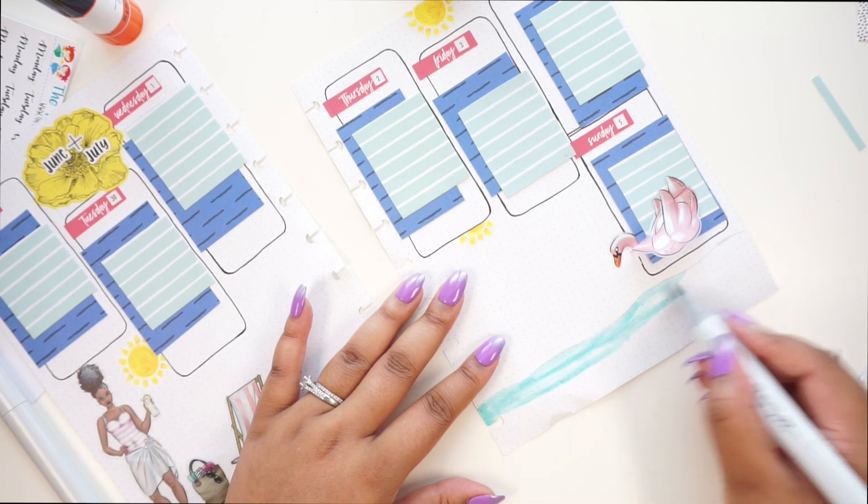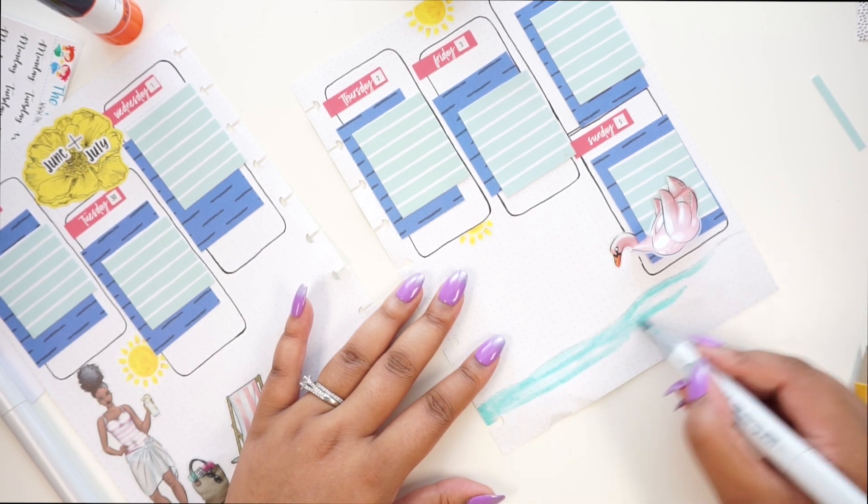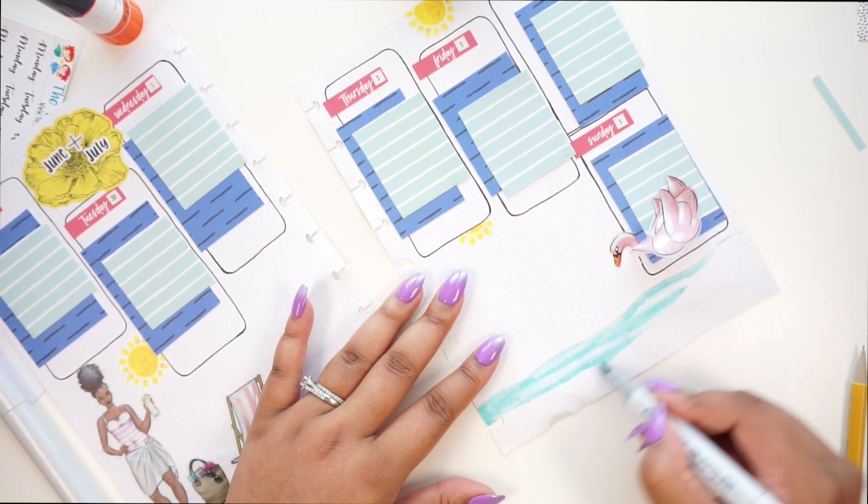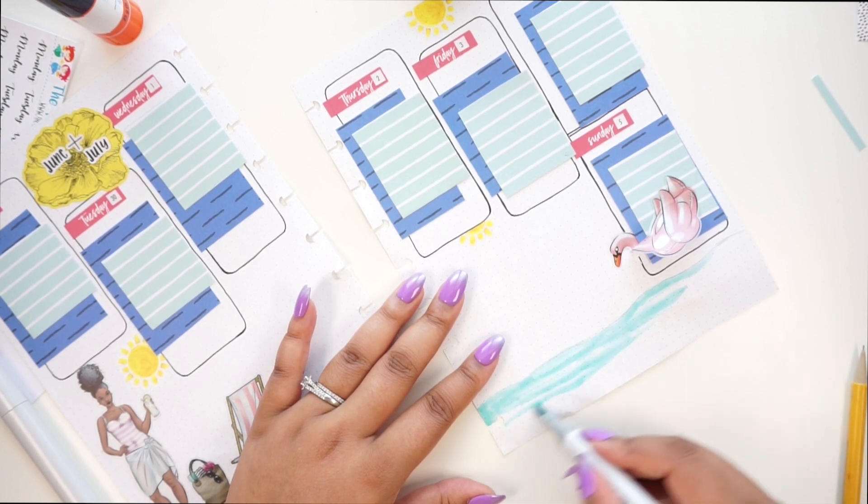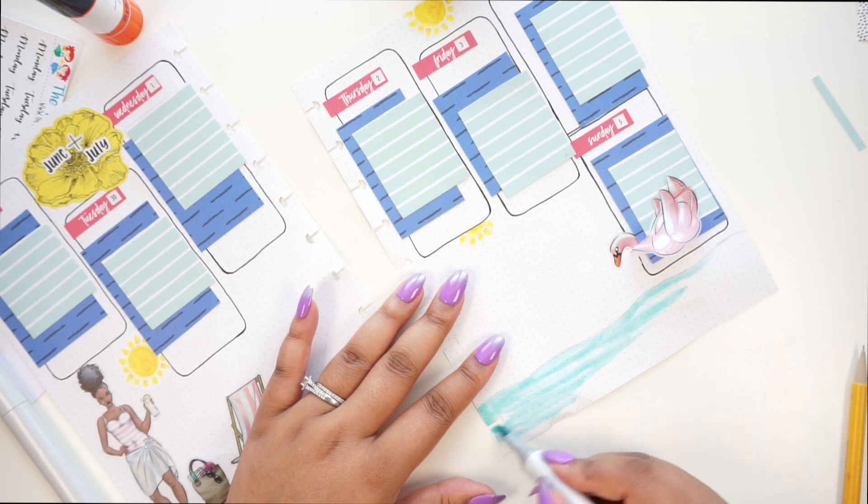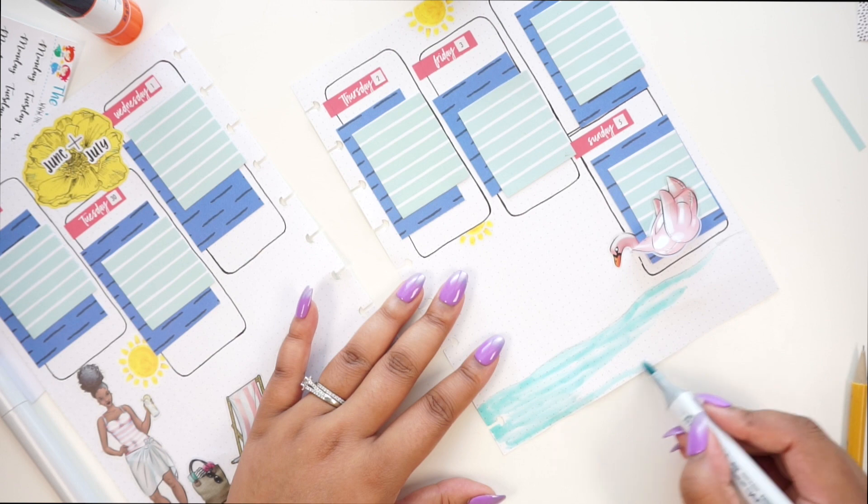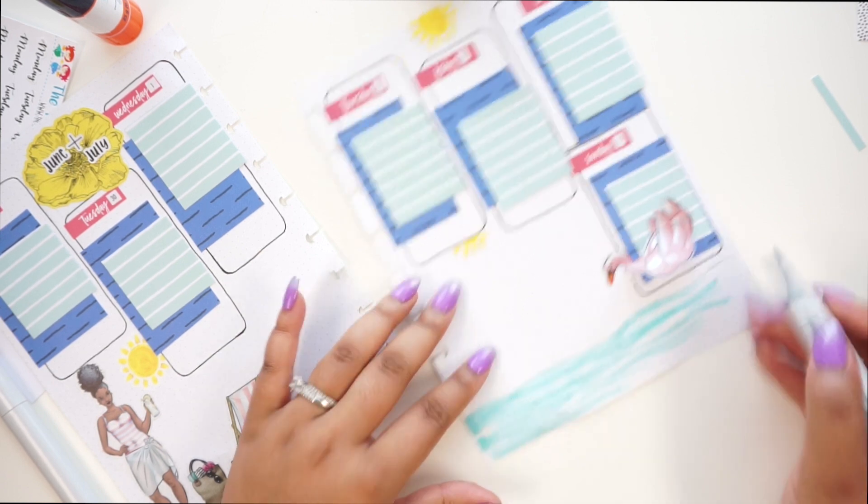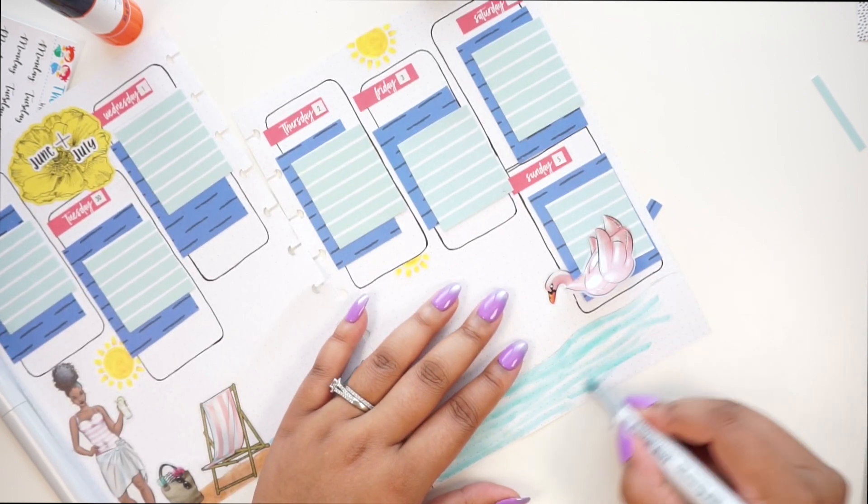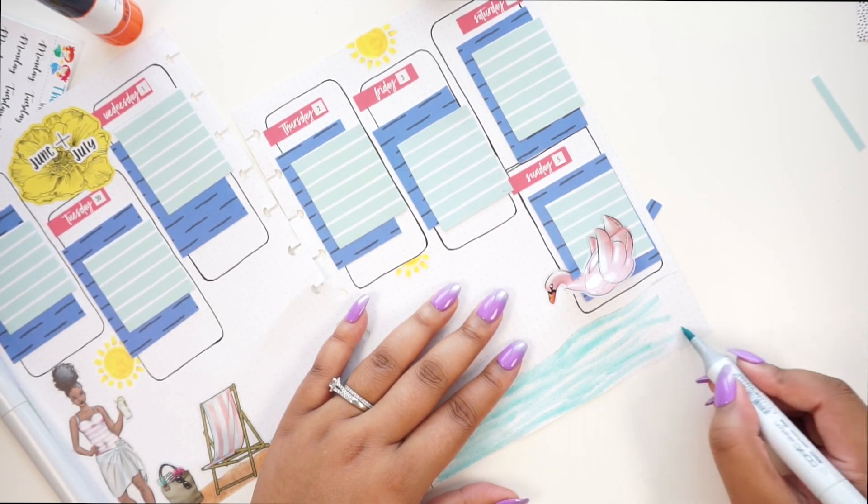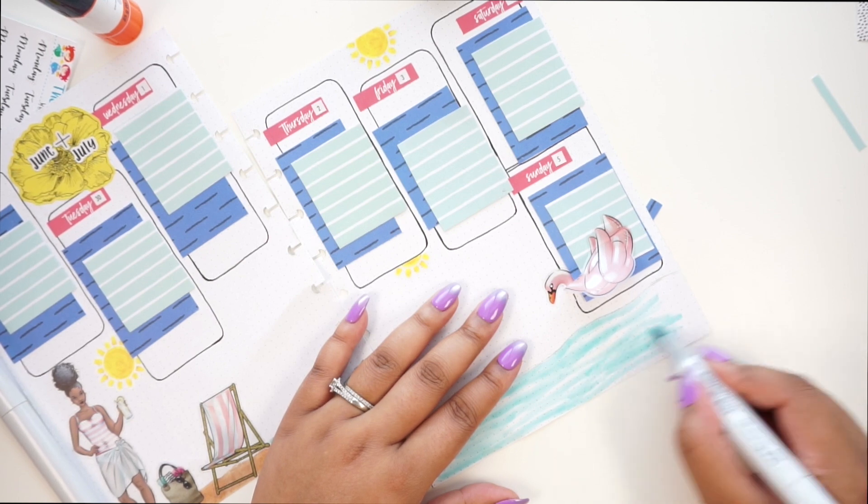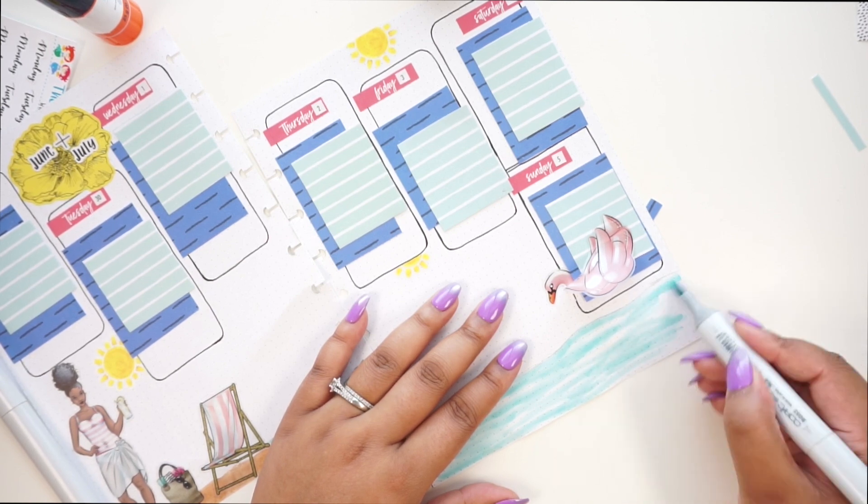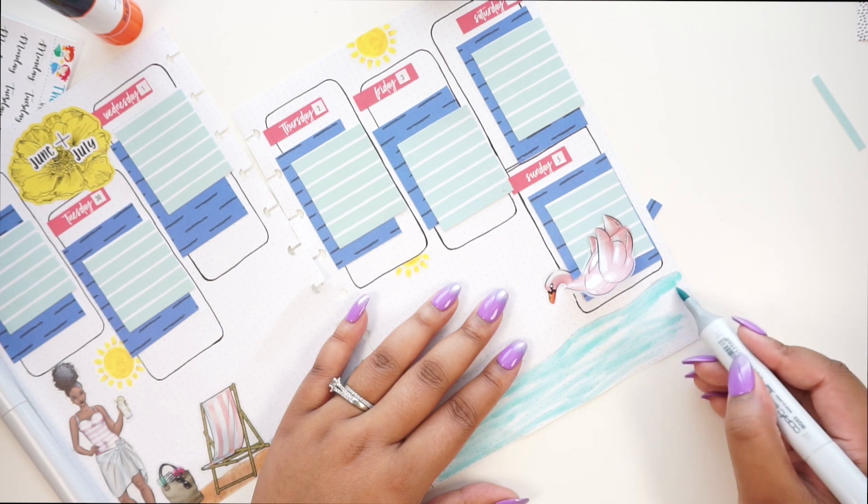I could always put white out on it too if I wanted stronger highlights in the water. This is pretty easy to do too. You don't have to have too much crazy artistic talent to color in water. It's not that hard.